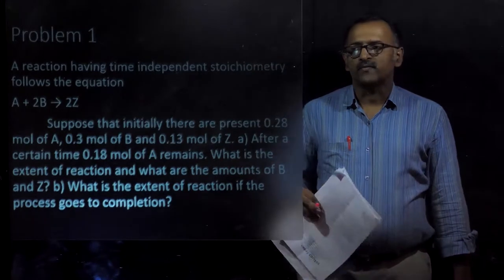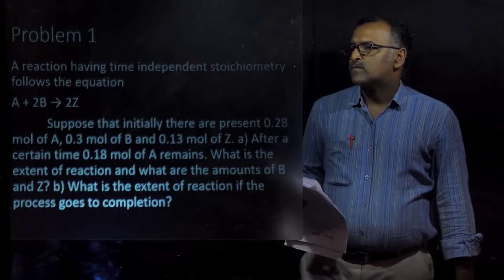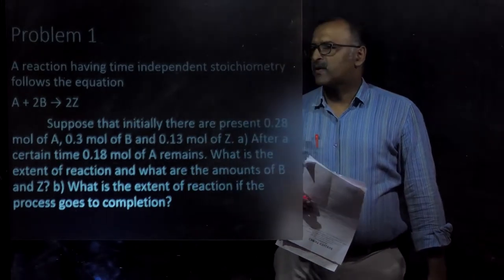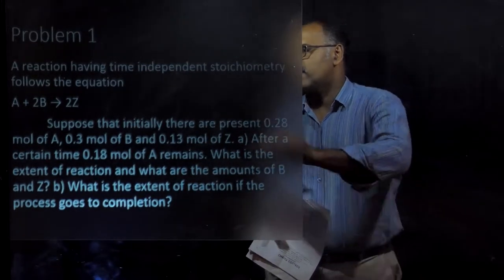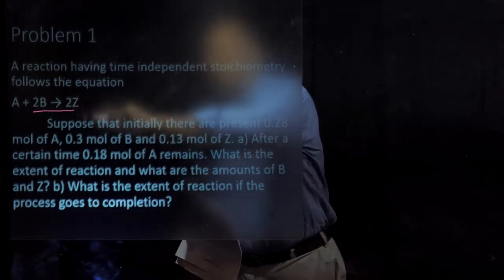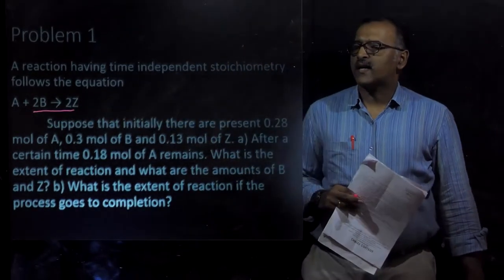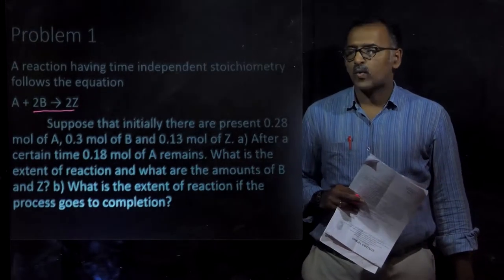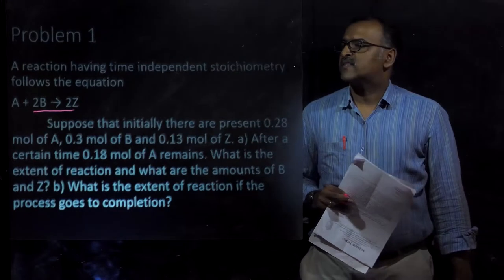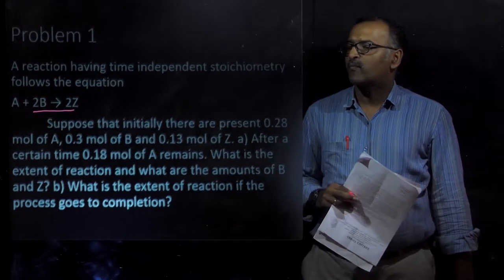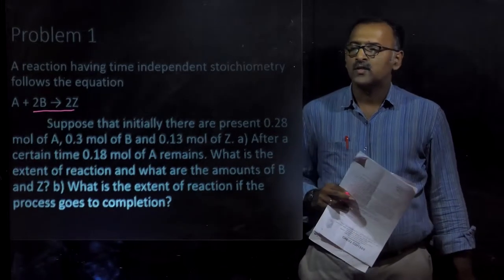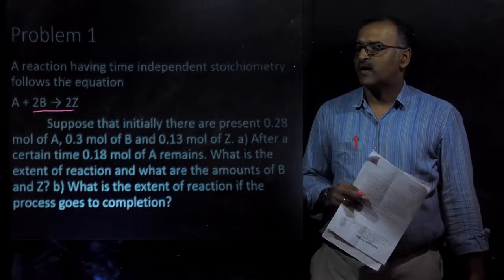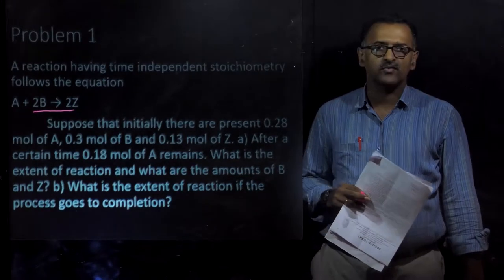Let us see some problems. The first problem: a reaction having time-independent stoichiometry follows the equation A + 2B → 2C. Suppose that initially there are 0.28 moles of A, 0.3 moles of B, and 0.13 moles of C. After a certain time, 0.18 moles of A remains. What is the extent of reaction and what are the amounts of B and C? What is the extent of reaction if the process goes to completion?